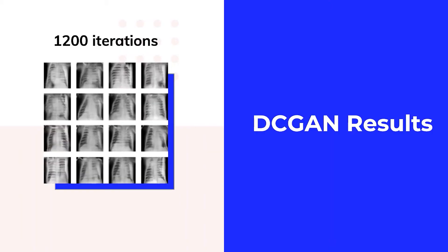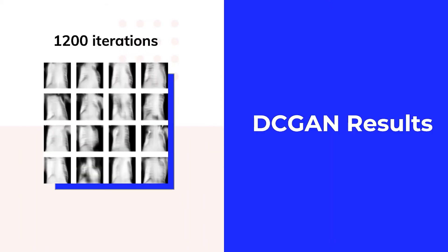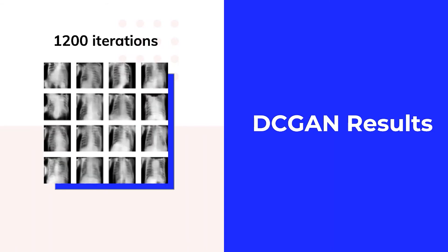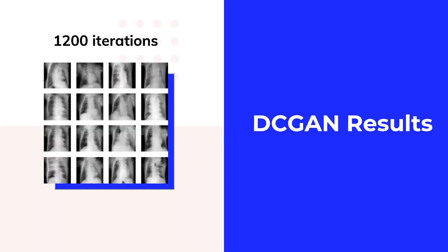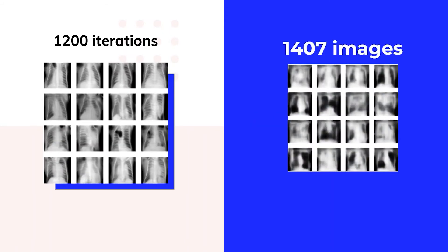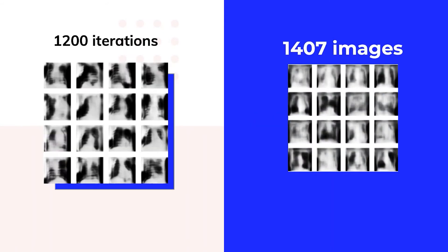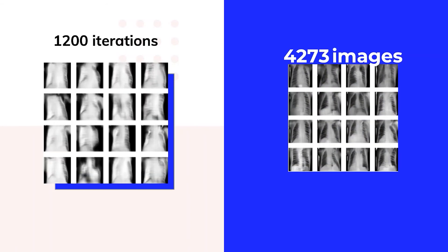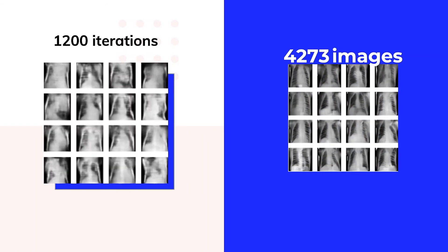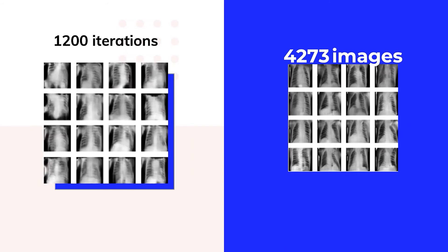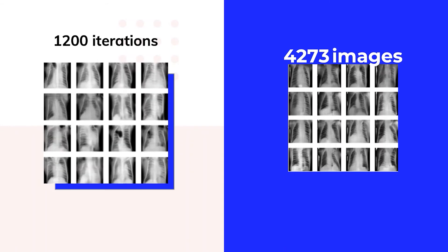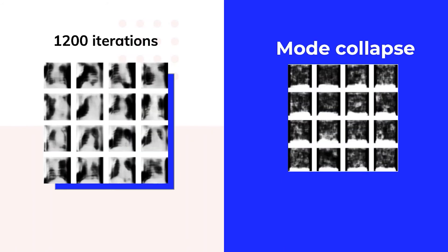These are our results after 1200 iterations. If we look to the right, we can see two main factors which we found to influence our GAN. The first being the size of the training dataset. These are images produced with 1,407 training images, and these are images produced with 4,273 training images. As you can see, the size of the training dataset has a huge impact on image quality.